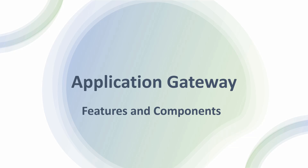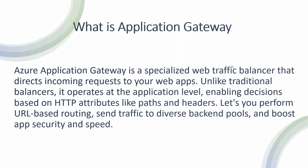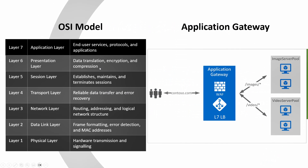Hello everyone, my name is Shailanda Chaudhary and in this video I'll be explaining about what is Application Gateway, its features, components and how it works. Application Gateway is a web-based load balancer that works on OSI layer 7, which is the application layer. It is also called the HTTP layer.